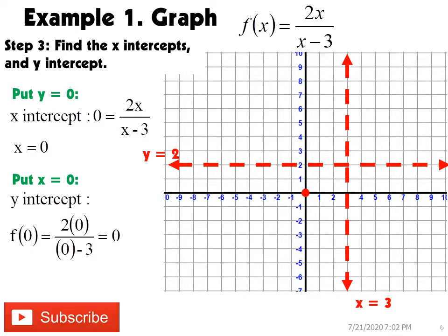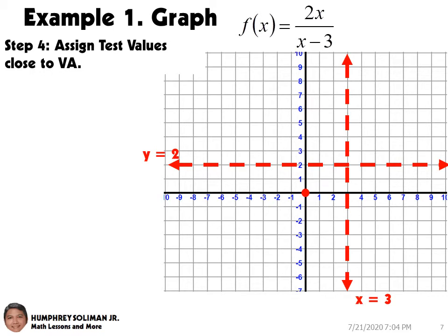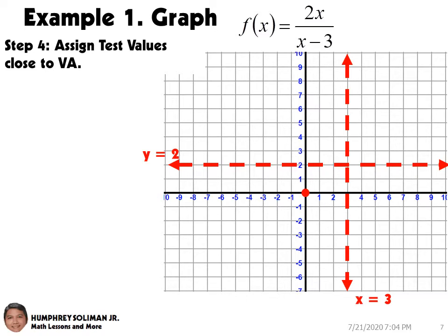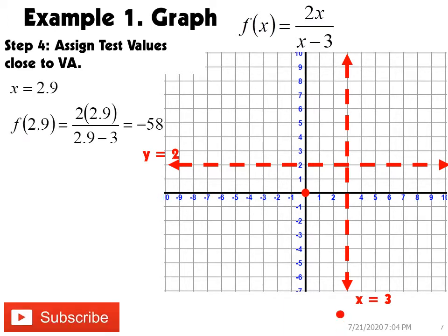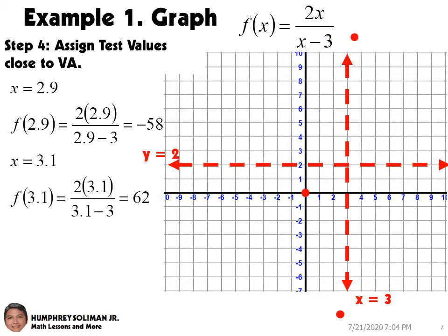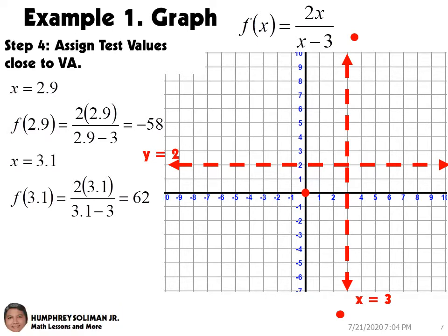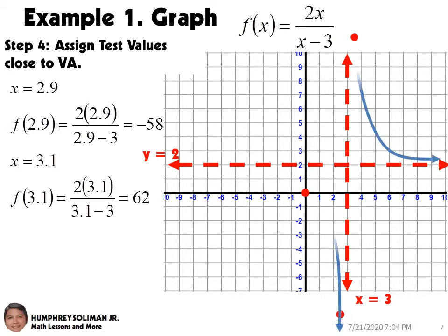For step number four, we need to assign test values close to our vertical asymptote. This will help us determine the points close to our vertical asymptotes. From the left side of our vertical asymptote, x equals three, we have x equals 2.9. Solving for y, we get negative 58. From the right side, we have x equals 3.1. Solving for y, we get y equals 62. Plotting these two ordered pairs, the graph grows downward as it approaches the vertical asymptote from the left, and goes upward as it approaches from the right. We are now ready to graph our rational function.